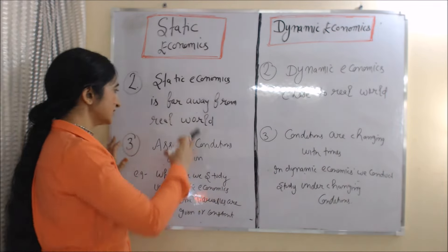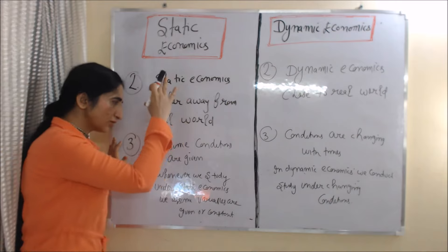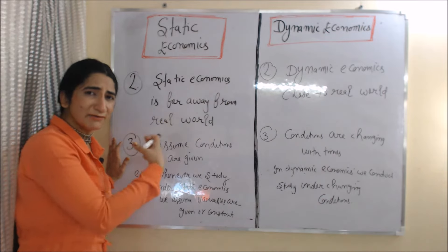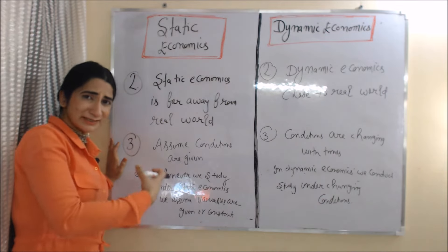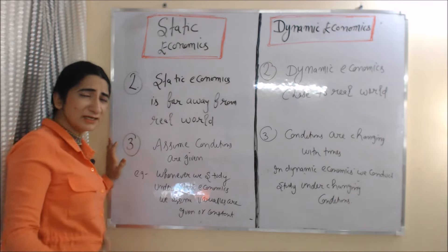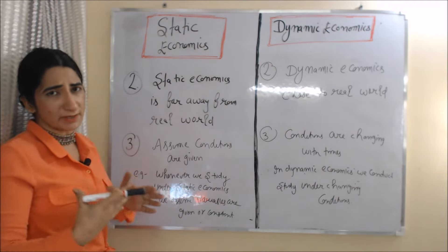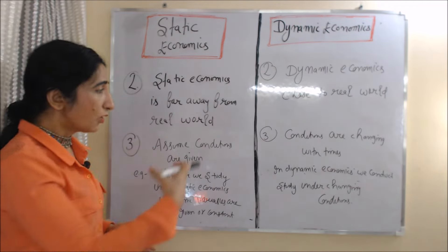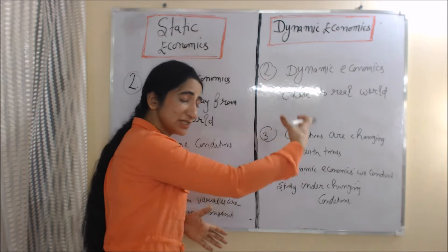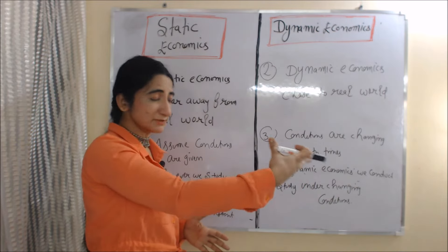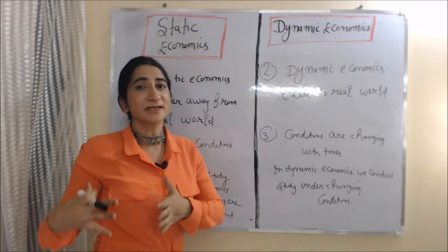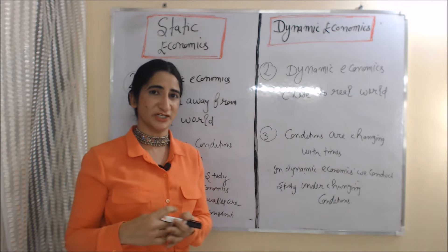The next difference is that static economics assumes conditions are given. Whenever we conduct a study under static economics, we assume conditions are given or variables are constant. On the other hand, dynamic economics says conditions are changing with time, meaning we conduct study under changing conditions.